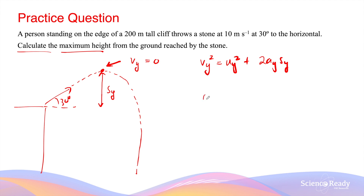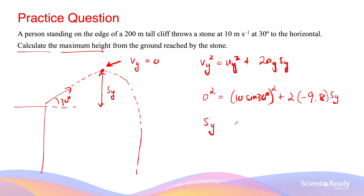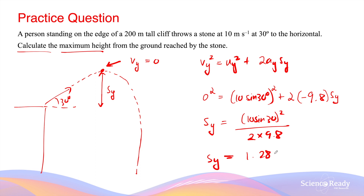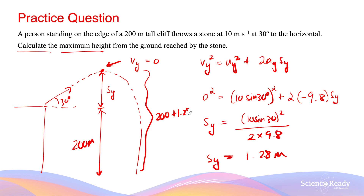Substituting values: vy = 0 at maximum height, uy = 10·sin30°, and ay = −9.8 m/s². Rearranging to make sy the subject gives sy = uy² / (2 × 9.8), which solves to sy = 1.28 meters. This 1.28 meters only corresponds to the maximum vertical displacement above the launch point. To find the maximum height from the ground, we add the cliff height: 200 + 1.28 = 201.28 meters.